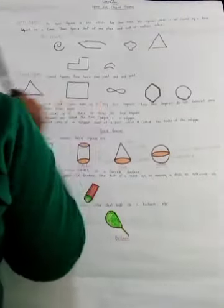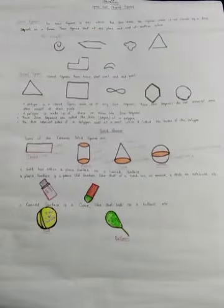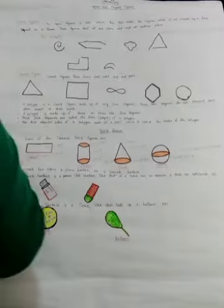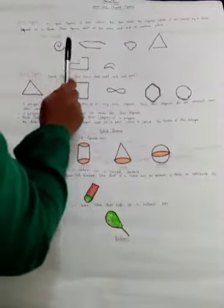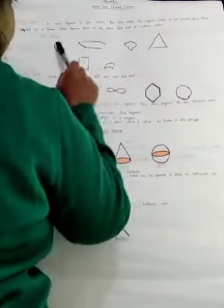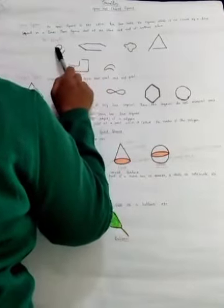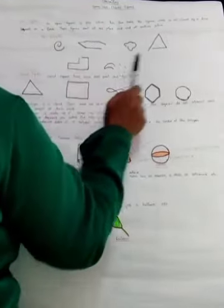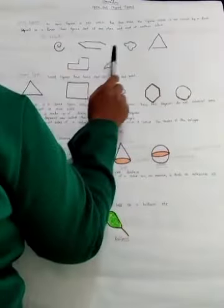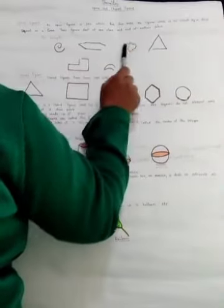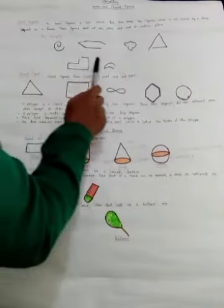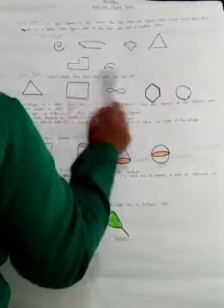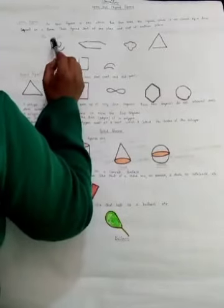The concept of category is open and close figure. An open figure is one which has two ends. The figure is closed by a line segment or a curve. This figure starts at one place and ends at another place. This is a figure with two open sides.